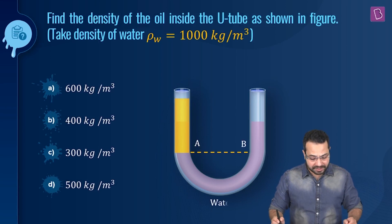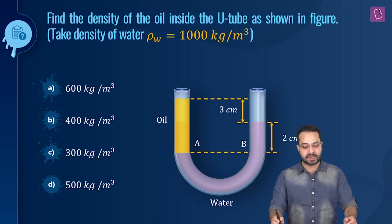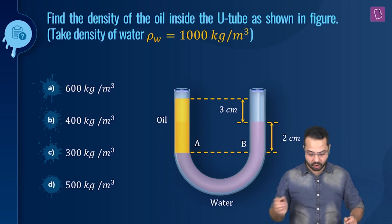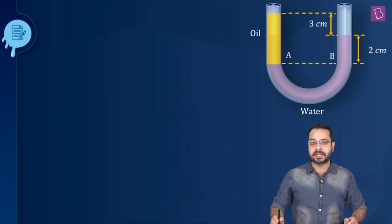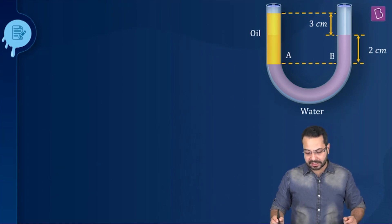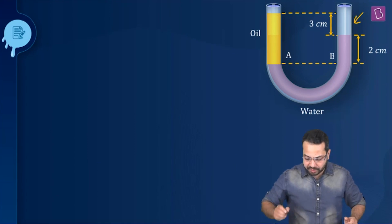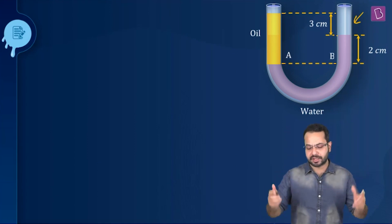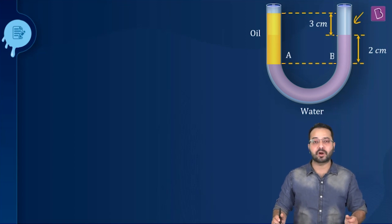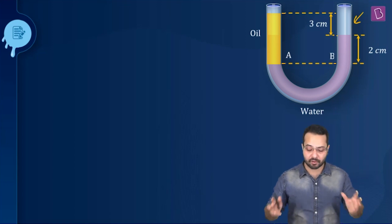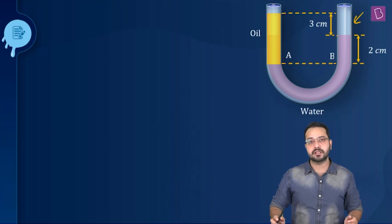The question is: find the density of the oil inside the U-tube as shown in the figure. There is oil in one of the arms and water in the other arm. This part has air — there is no liquid in that part. We have to find out what is the density of oil, given that this system of liquids is in equilibrium.